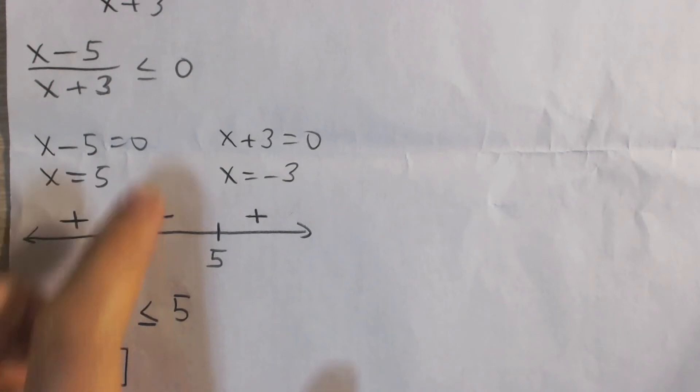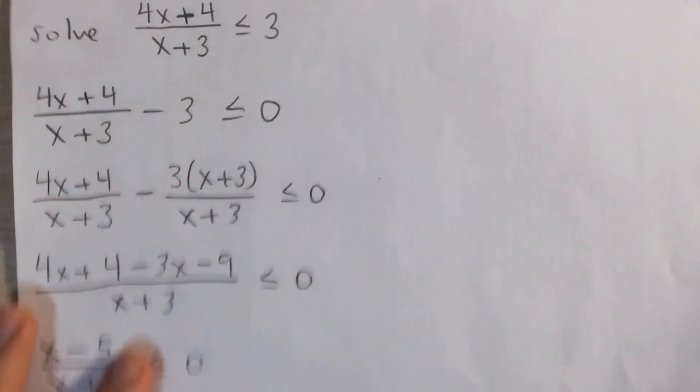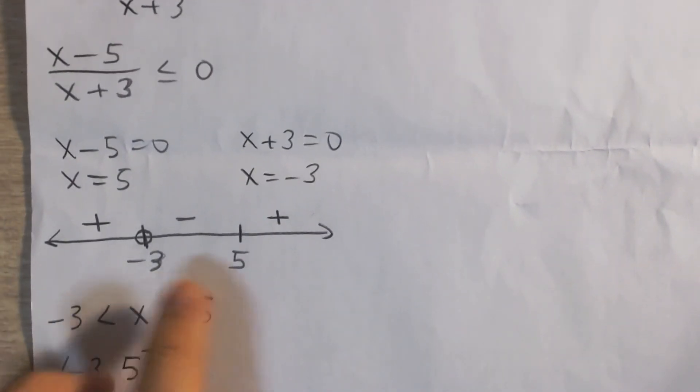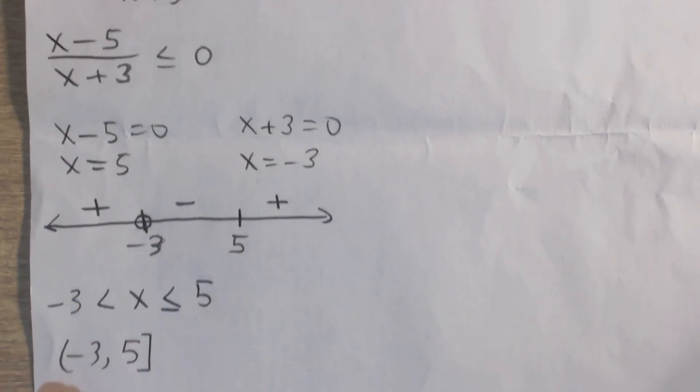And so our final answer, we're trying to find where this inequality, back to our original inequality, is less than or equal to 0 in this case. Well, that's from negative 3 to 5, but not including negative 3 because it's not equal to 0 there. It's undefined there.